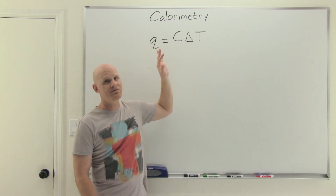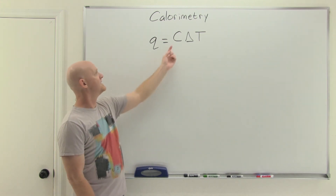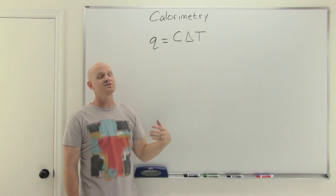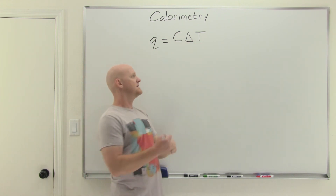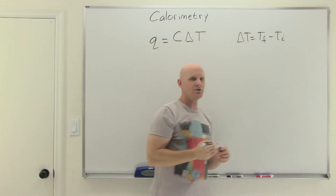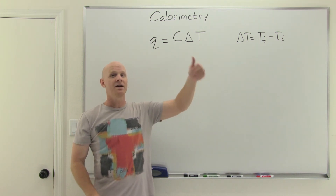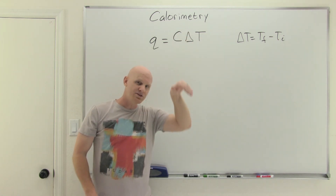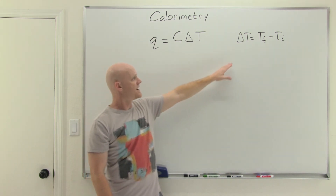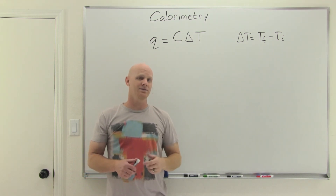So calorimetry — we'll start with this equation: q is heat being transferred either into or out of a system. C is what we call the heat capacity, and delta T — delta always means the change in something — so delta T is the change in temperature. A delta always means the final value minus the initial value. So if your temperature goes up, you'll have a positive delta T, but if your temperature goes down, you'll have a negative delta T. Temperatures that are increasing have positive delta T's; temperatures that are decreasing have negative delta T's.